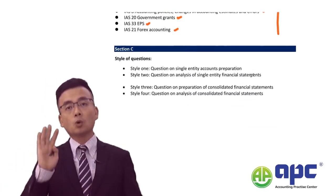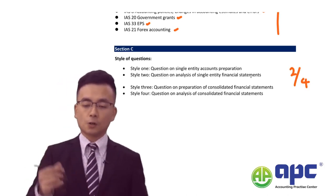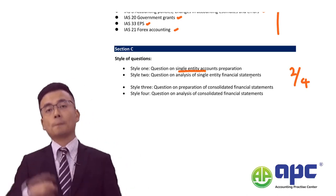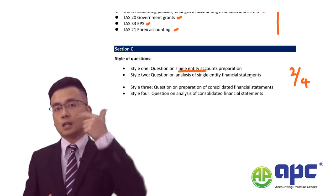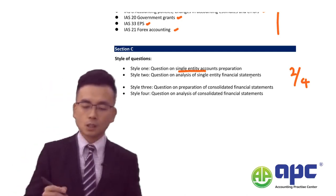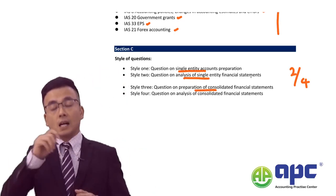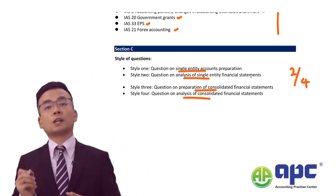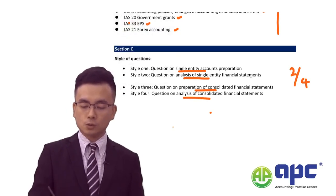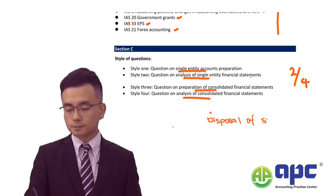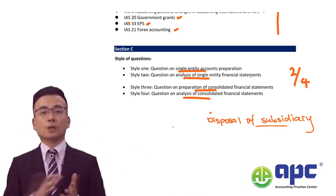In Section C, there are four types of questions and you will get two of them in your actual exam. Style one requires you to prepare single company financial statements — given a trial balance with lots of adjustments to prepare the statement of financial position, statement of profit or loss, and statement of changes in equity. Style three involves preparation of consolidated financial statements and analysis of consolidated financial statements, including the effect of disposal of a subsidiary — calculating gains or losses and making sensible comments on whether the disposal is beneficial.